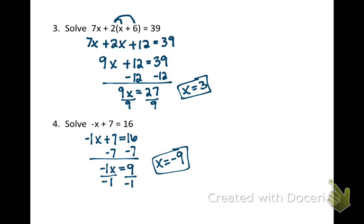So if you forget to put this as a negative 1x right here, you may accidentally drop your negative sign, and you would have come out with the answer x equals 9. But that's not our answer, so you want to make sure that you always put that negative 1 there, or at least remember to divide by a negative so that you get the correct answer.